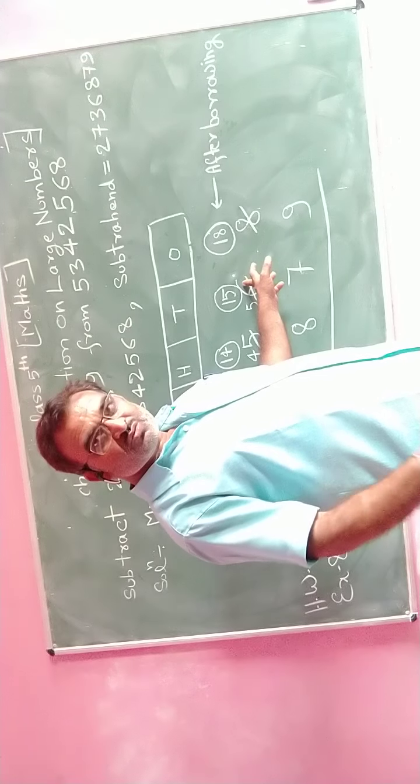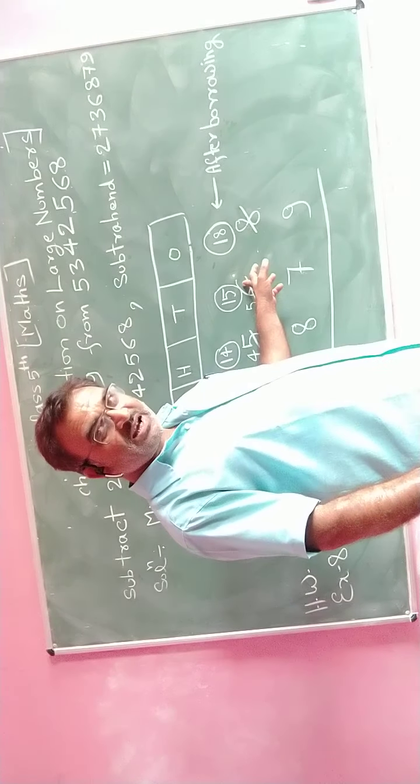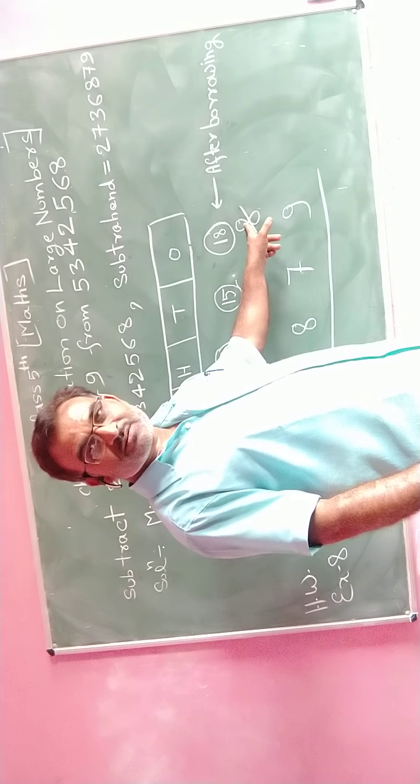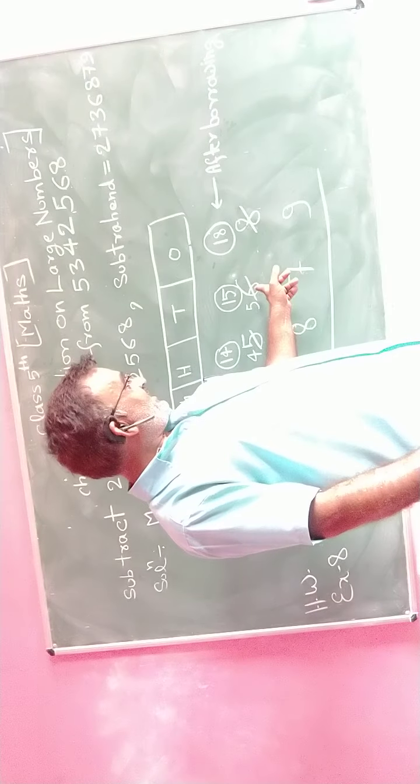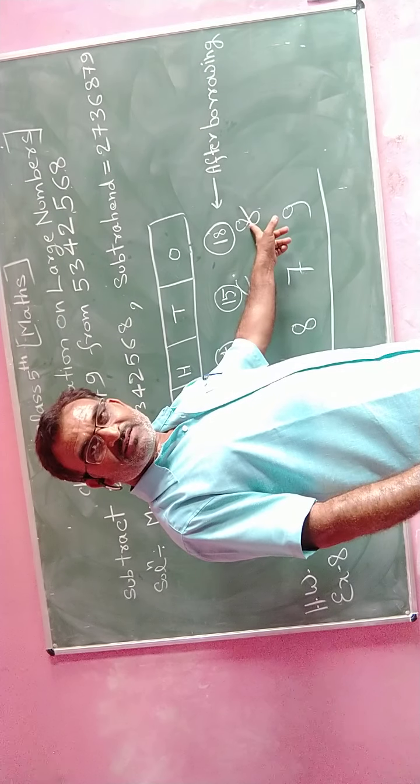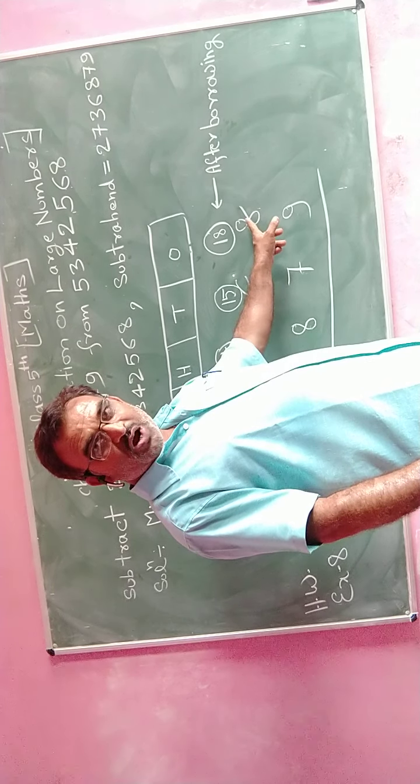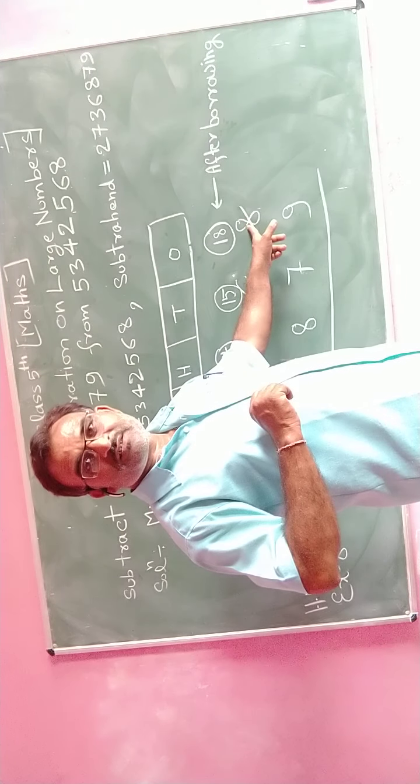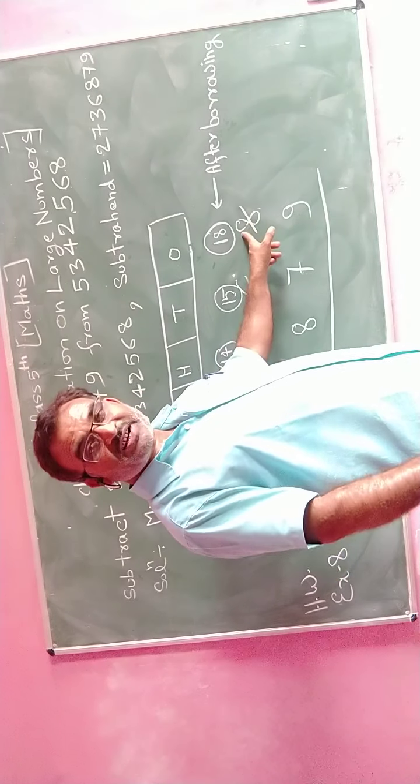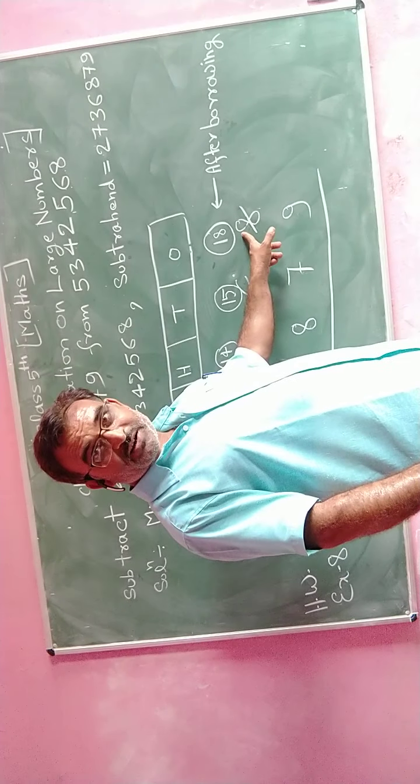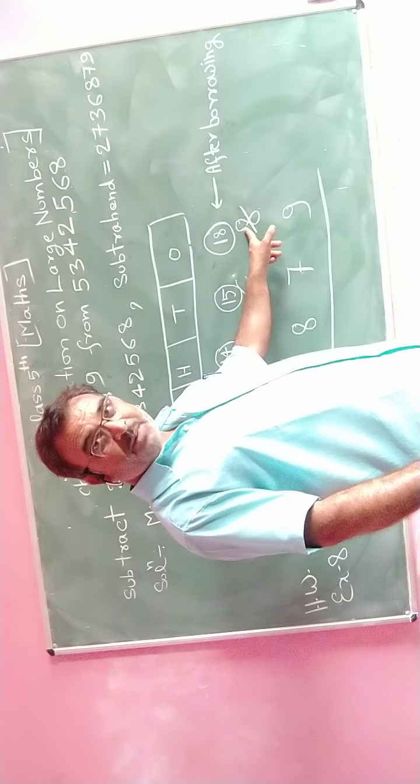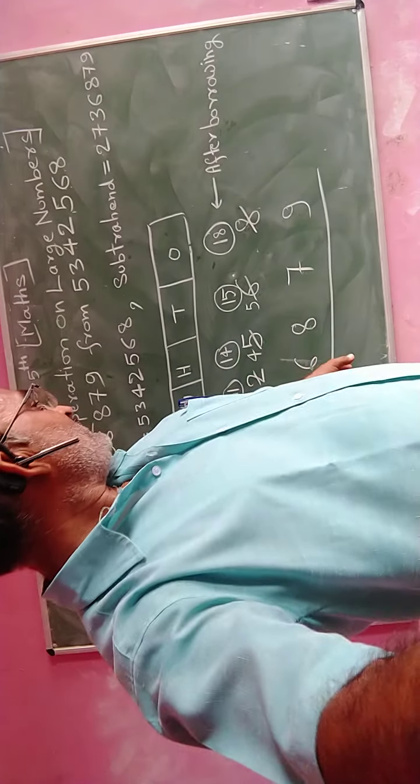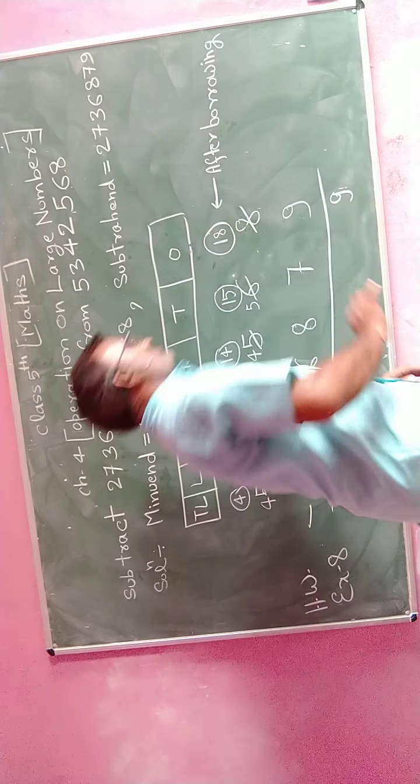We borrow one number from the left digit, that is ten's digit, from 6 we borrow 1, you carry one. When we have ten's value, then value of 8 is 10 plus 8, we have 18. 18 minus 9, that is equal to 9.